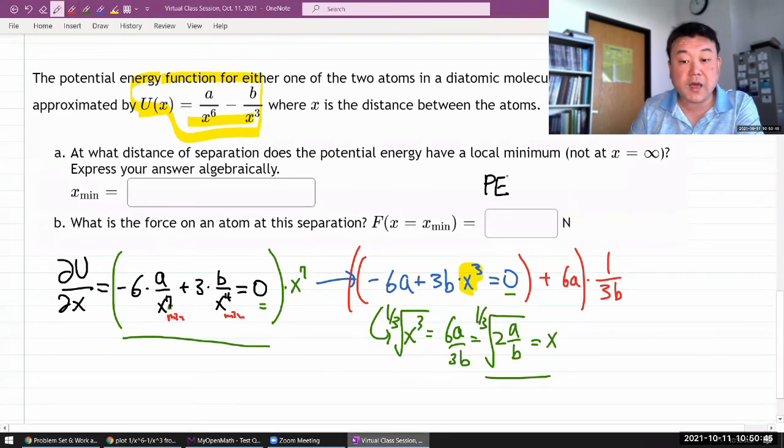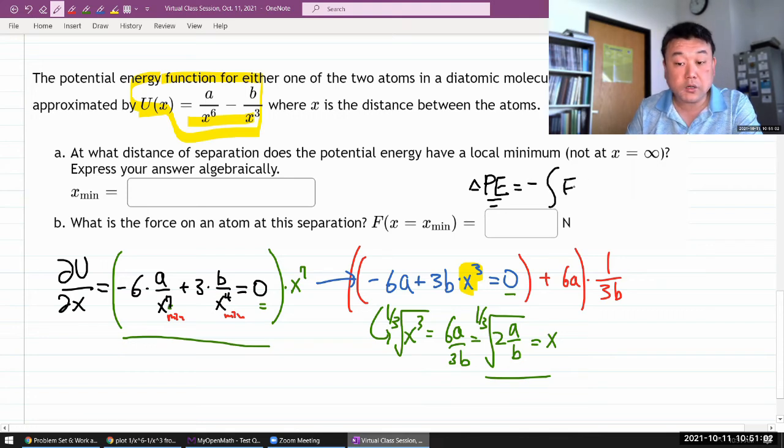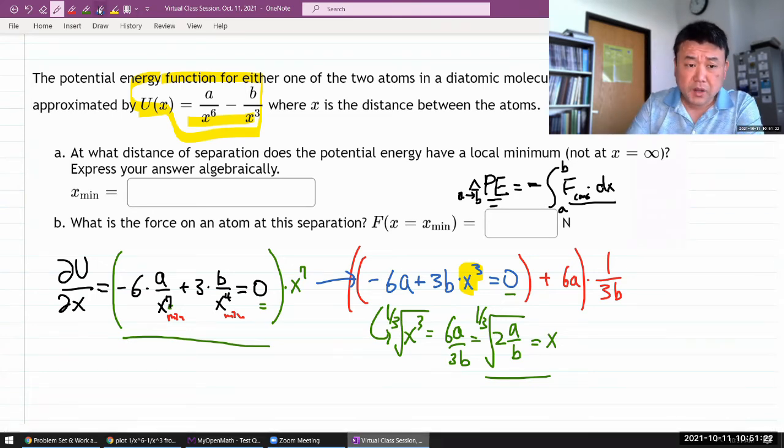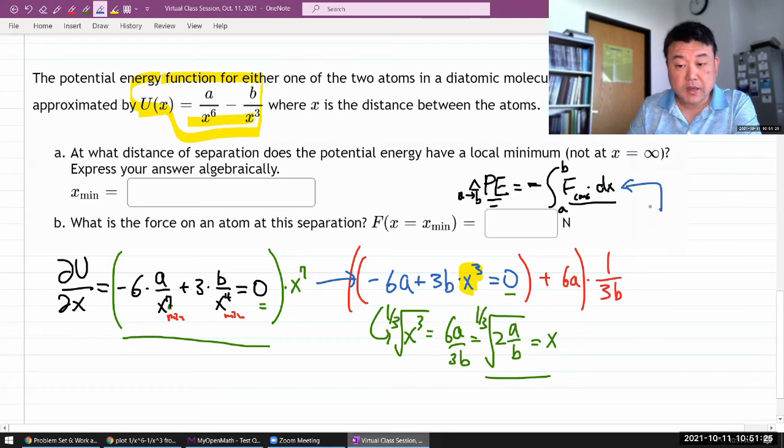Especially ahead of deriving the potential energy for spring force. We said that there's a relationship between potential energy and conservative force. As in, change in potential energy is minus of the work done by the conservative force. So change in potential energy from A to B is integral of the work done by conservative force A to B minus the sign. So that when conservative force does negative work, you get positive change in potential energy. And the flip side of this relationship is this.